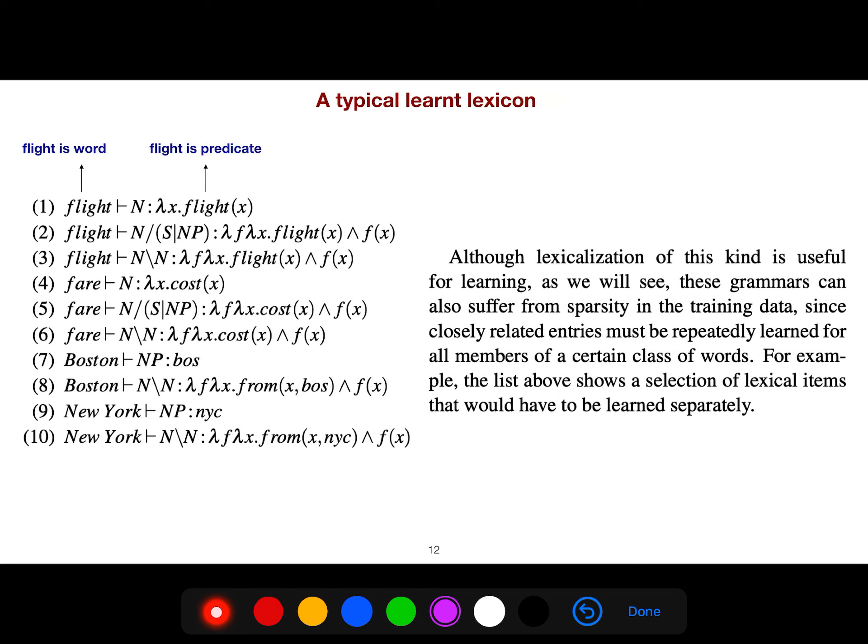A typical learned lexicon is like this. Flight is word. You see for word flight, you see three different logical forms and three different categories. Because we said that these are categories, the combination of syntax and the logical form, we call it category. We have, for one word, three categories. For another word, we have, again, three categories. I will explain a technique in the next lecture.